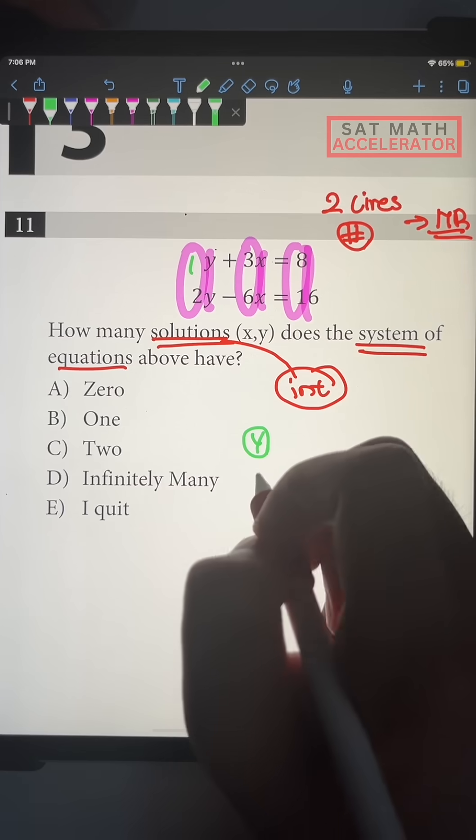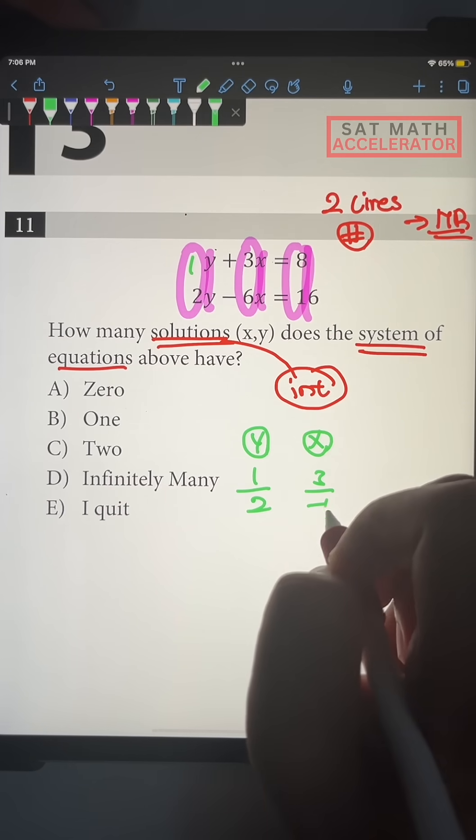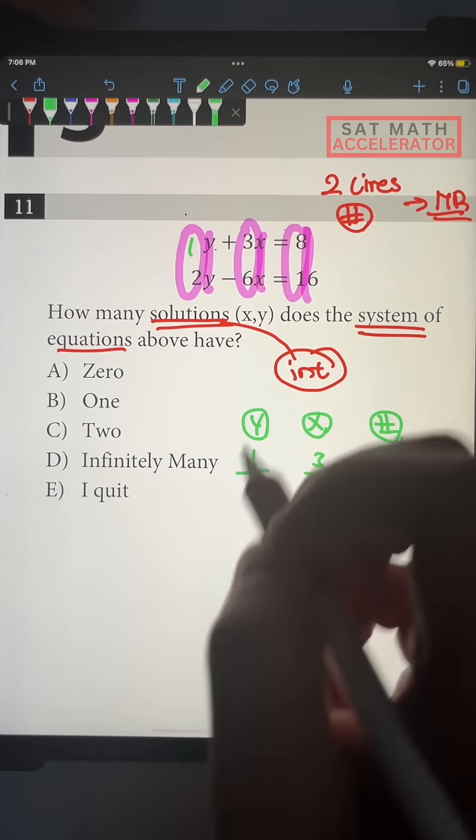So in this case, our y's are going to be 1 over 2. Our x's are going to be 3 over negative 6, and our number portion is going to be just 8 over 16. Then, you just simplify these numbers.